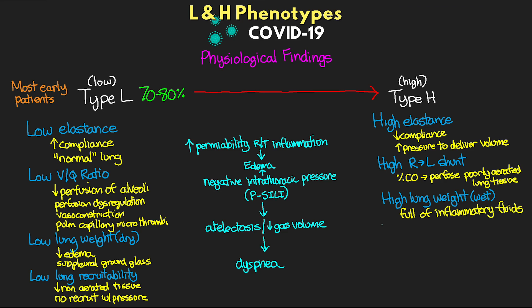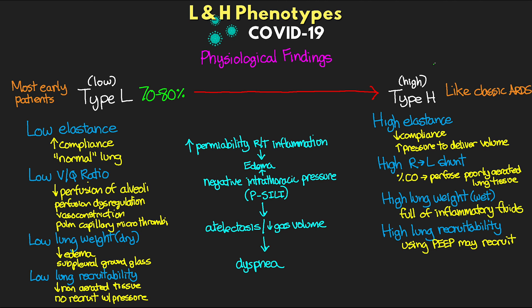Now let's talk about the Type H phenotype — things here are 'high.' These patients have high elastance, meaning low compliance, requiring higher pressures to deliver volume. There is a high right-to-left shunt because a fraction of cardiac output perfuses across poorly aerated lung tissue, developing in dependent lung regions. There is high lung weight — wet lungs full of inflammatory fluid, on the order of severe ARDS. Finally, high lung recruitability means that using PEEP we may actually be able to recruit collapsed, fluid-filled lung segments. About 20–30% of COVID patients present with this H-type, classic ARDS presentation.